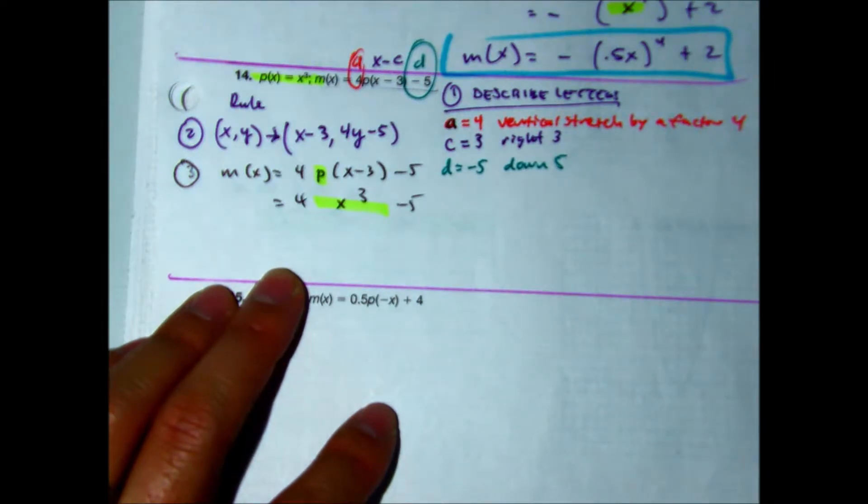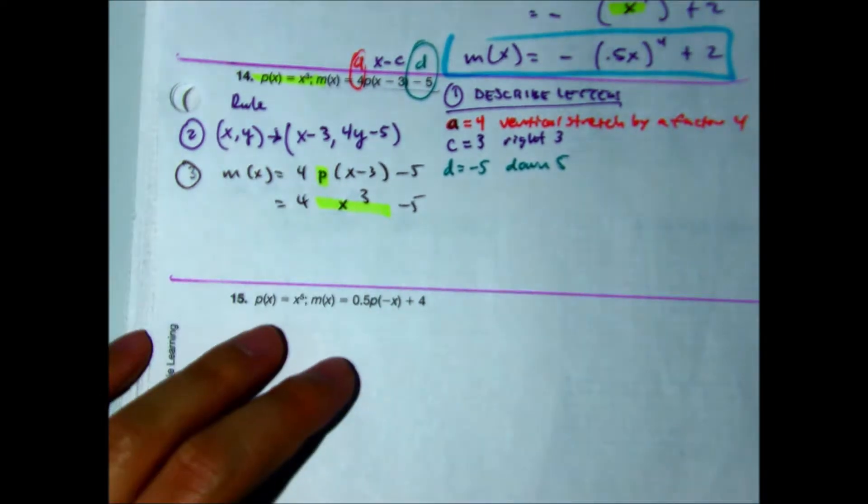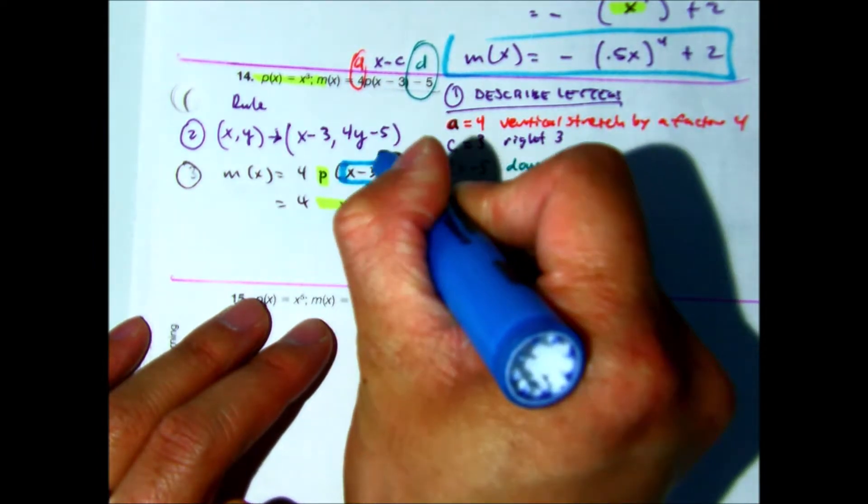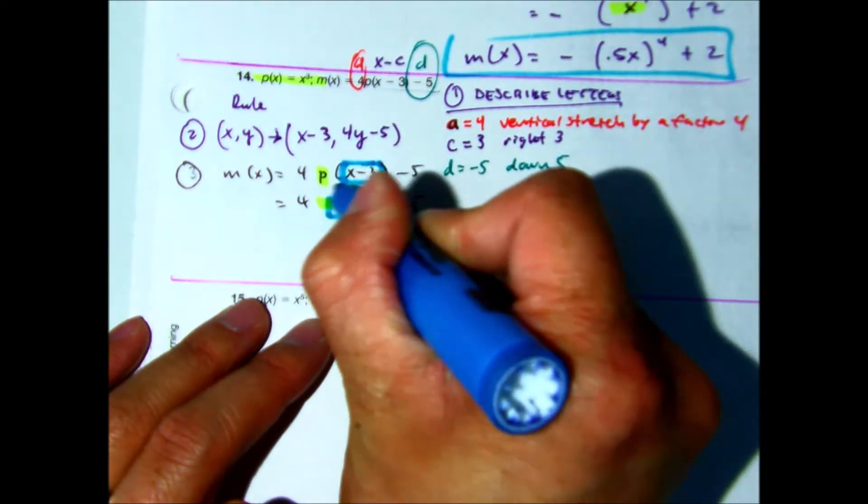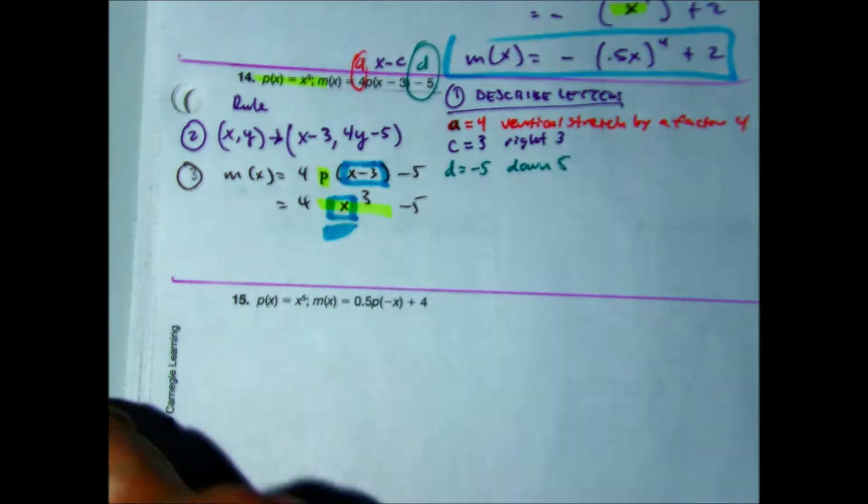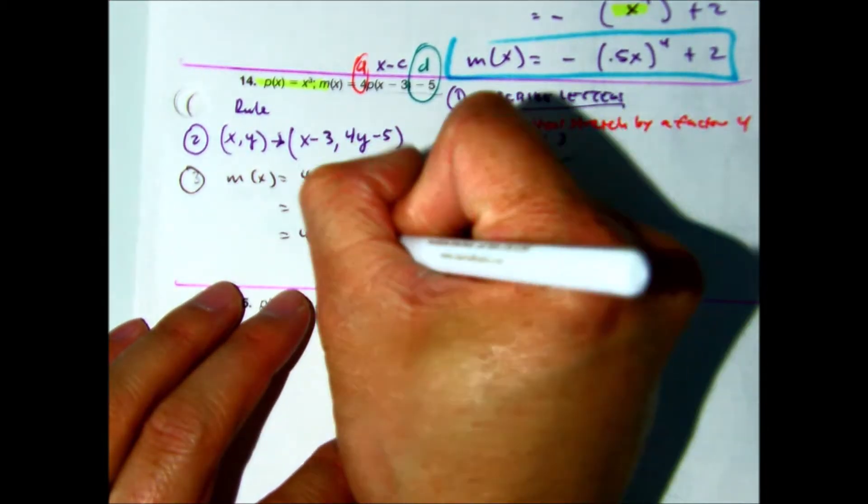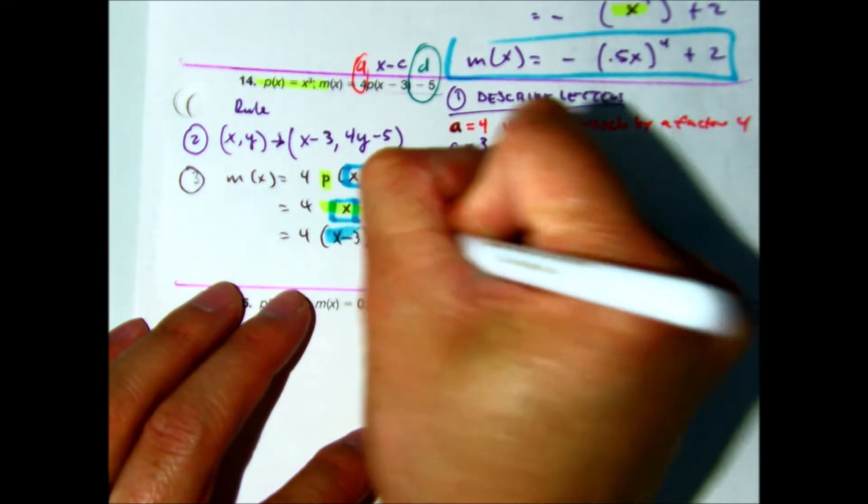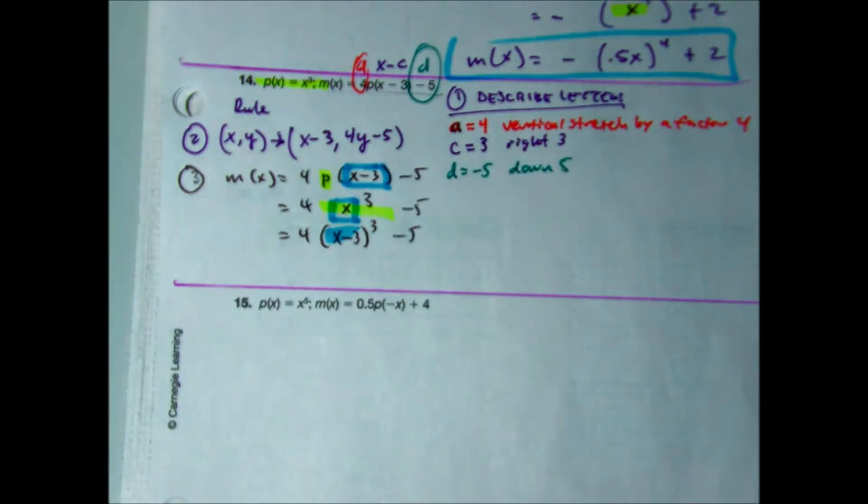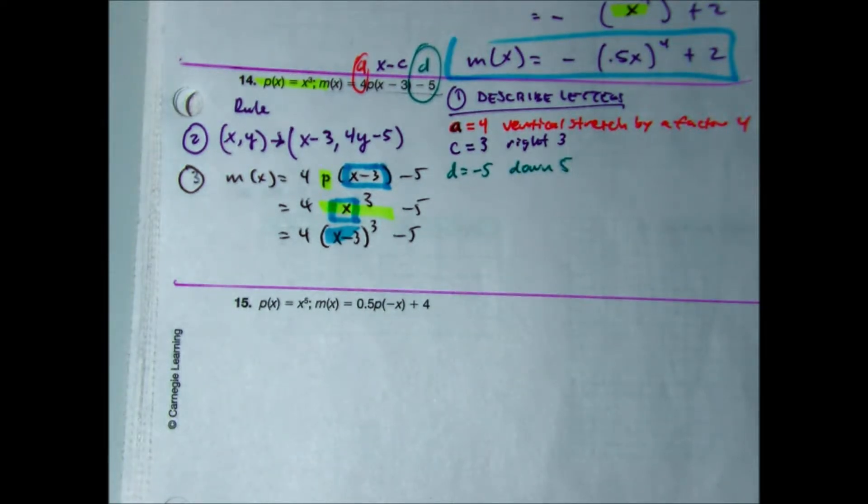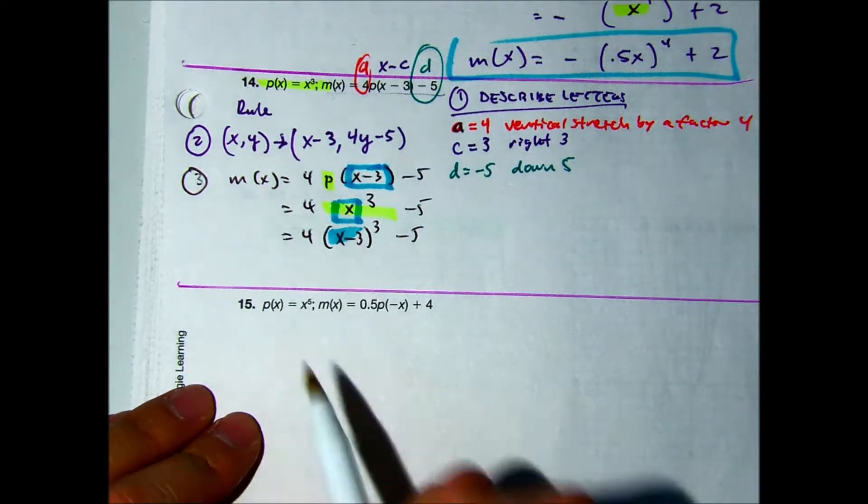Here's the hard part. They want us to do a second substitution. They're saying every X value in P, you're going to put in X minus three. So now I have four times X minus three cubed minus five. But there's more. How would you expand X minus three?